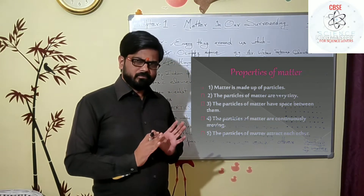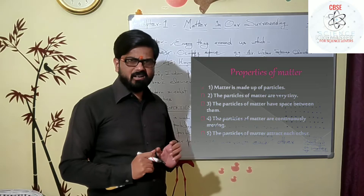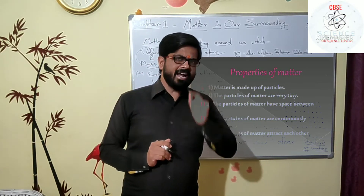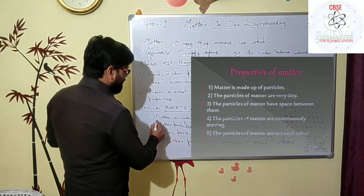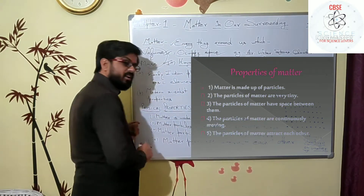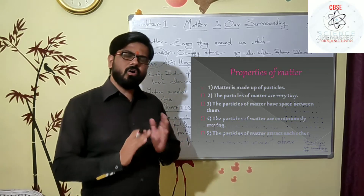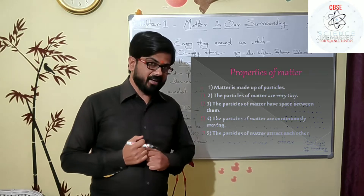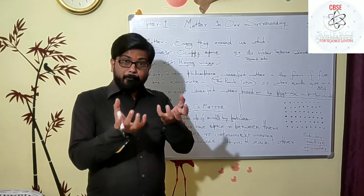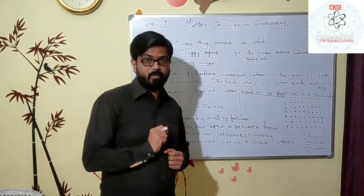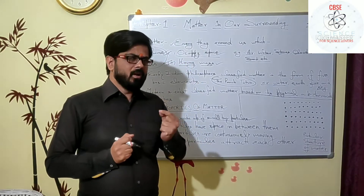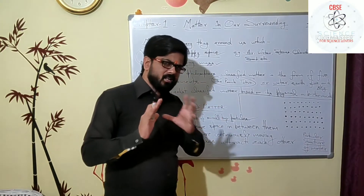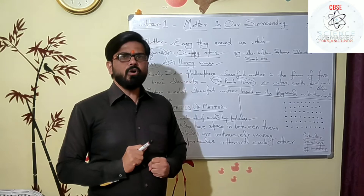All matter, whatever it may be, is physically made up of small, tiny particles. That is the first physical character of matter — all matter is made up of small, tiny particles, and matter is a bulk of these small particles. We will demonstrate one small activity to prove this.